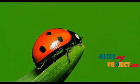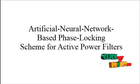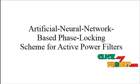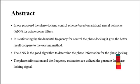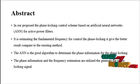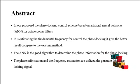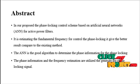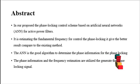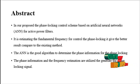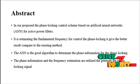Welcome to ClickMyProject.com. Now we discuss about the Artificial Neural Network based Phase Locking Scheme for Active Power Filters. In our proposed system, the phase locking control scheme is based on artificial neural networks for active power filters. It estimates the fundamental frequency to control the phase locking, giving better measurements compared to the existing method. The ANN is a good algorithm to determine the phase information for phase locking.